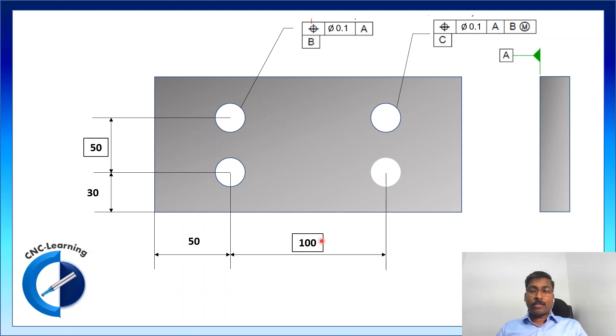You can see this dimension in a box and that is for true position. So, this 150 are true position.